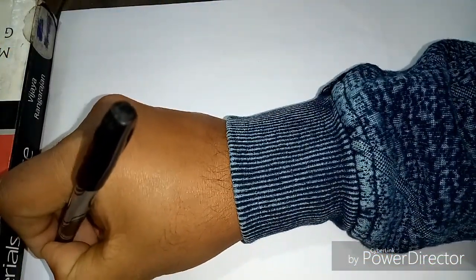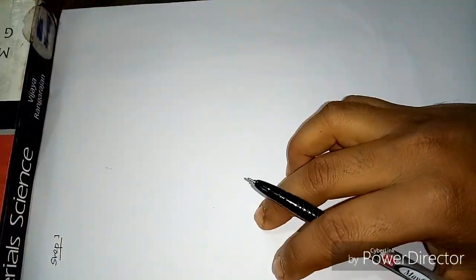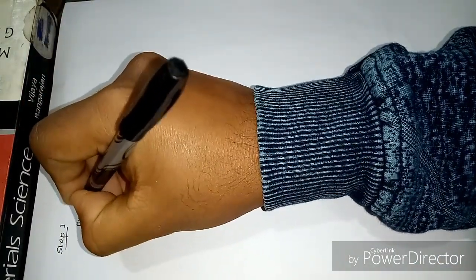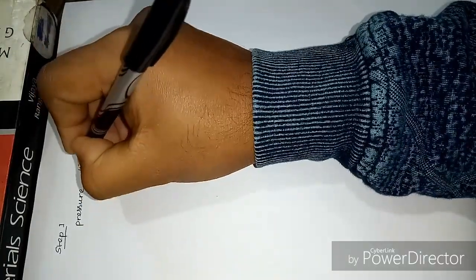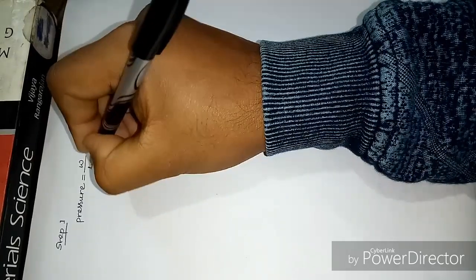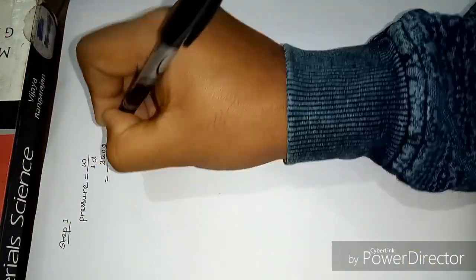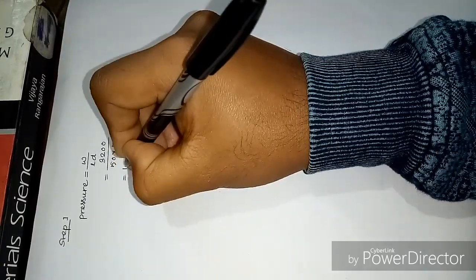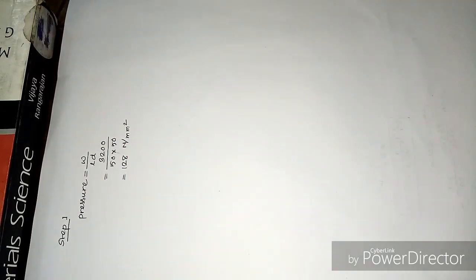First step is to determine the pressure. Pressure is weight divided by area, given by length into diameter. We have 3200 divided by 50 into 50, and we will have 1.28 Newton per mm square.